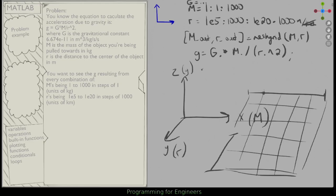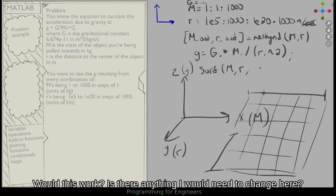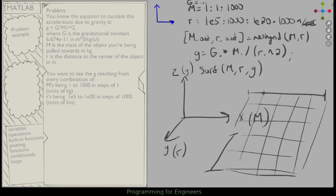Then I can do a surf of m, I want x to be m, y to be r, and z to be g. And that's exactly what I do. So let's pull this up in MATLAB and run it and see how it looks.